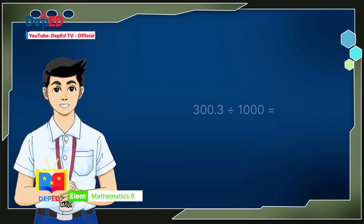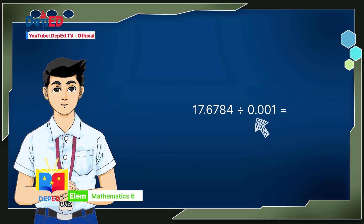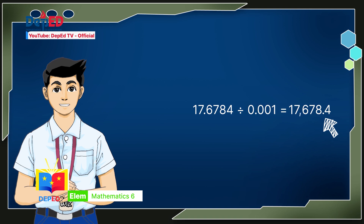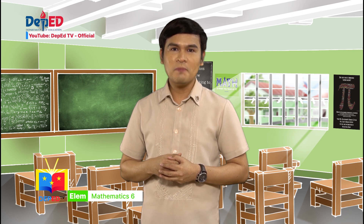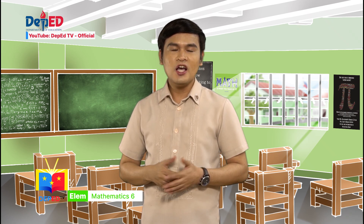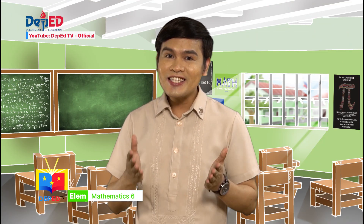For number 2, I moved the decimal point three places to the left based on the number of zeros the divisor has. So, 303 tenths divided by 1 thousand equals 3,003 ten-thousandths. For number 3, I moved the decimal point three places to the right based on the number of decimal places the divisor has. So, 17 and 6,784 ten-thousandths divided by 1 thousandth equals 17,678 and 4 tenths. Thank you so much, Mateo! It shows that you really learned how to divide decimal numbers by one-tenth, one-thousand, and one-thousandth mentally. I hope you also got the solution and answer just like what Mateo did.